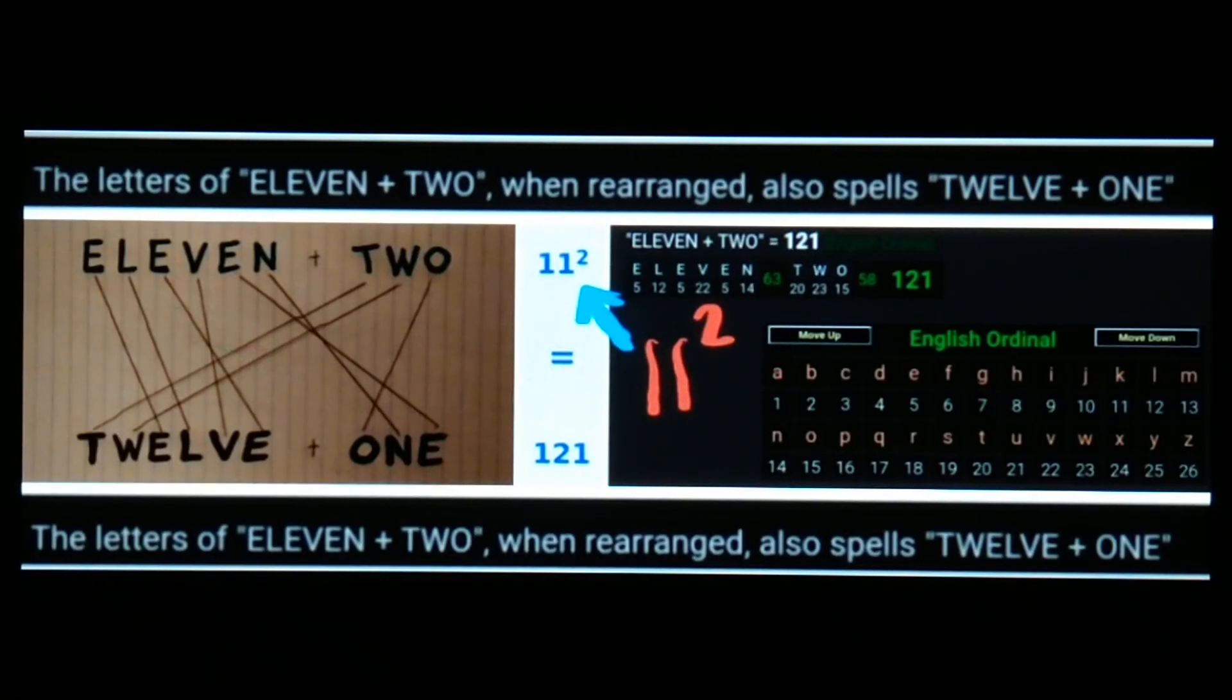There's something else kind of fun. If you use English ordinal gematria—the simple cipher, English ordinal—and just type out those words "11 2", that equals 121. And if you think of 11 with a little 2 next to it, you can think of 11 squared, or 11 times itself, equals 121.